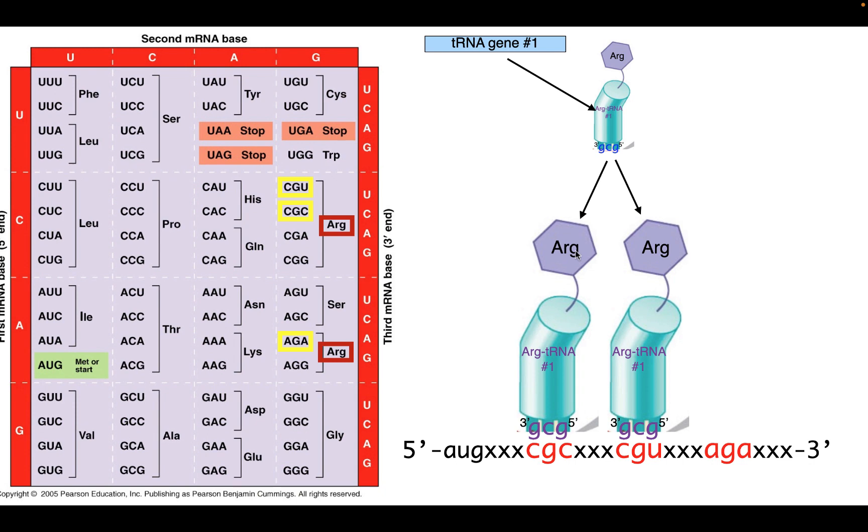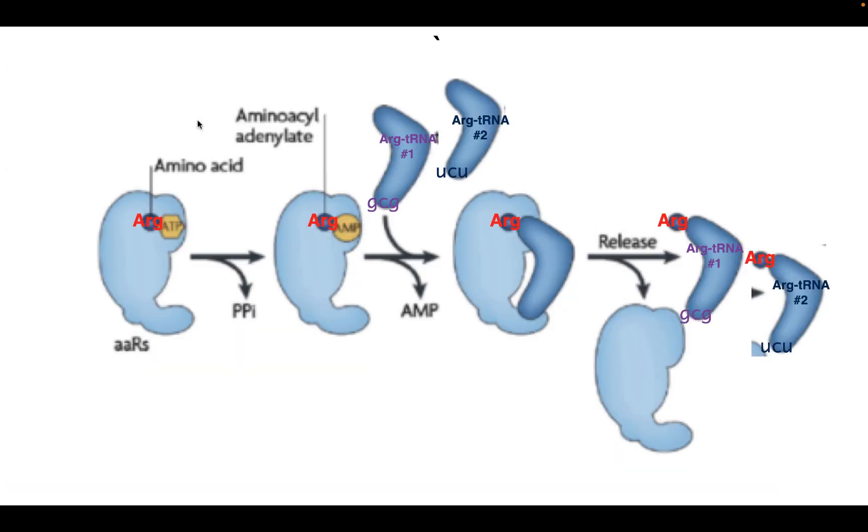It gets even more complicated than that. As I mentioned, the reason this tRNA only carries arginine is because this tRNA is a substrate of only one aminoacyl tRNA synthetase. These enzymes, aminoacyl tRNA synthetases, are the enzymes that take a transfer RNA and add to it a specific amino acid. Now, there are 20 different aminoacyl tRNA synthetases, one for each amino acid.